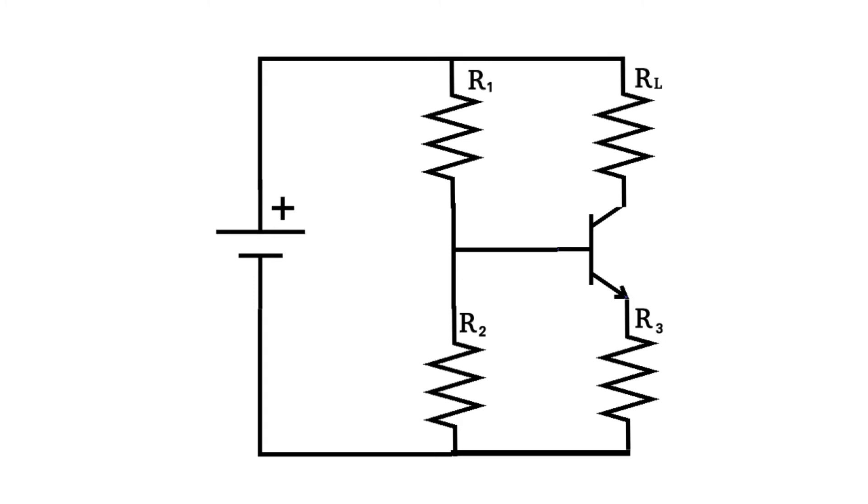The base of the transistor is polarized by resistors R1 and R2. The voltage present on the base, reduced by the VBE of the transistor, is applied on the fixed resistor R3, thus generating a constant current on the emitter and therefore on the collector, where the load RL is applied.